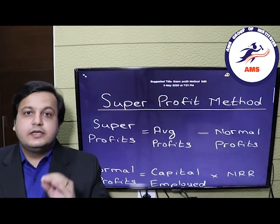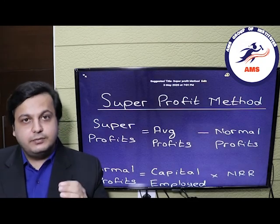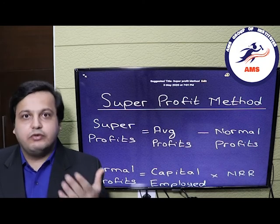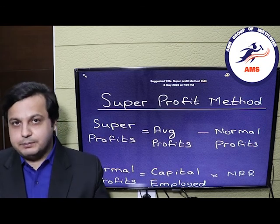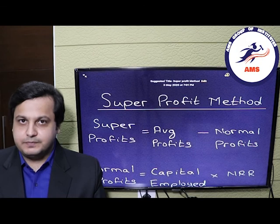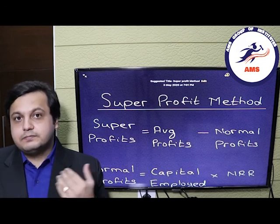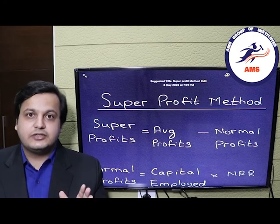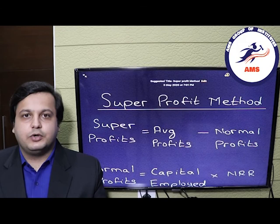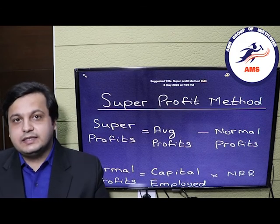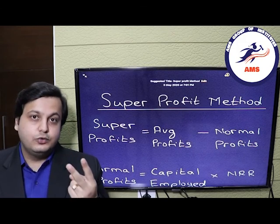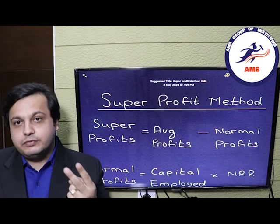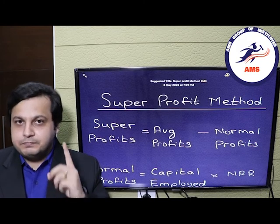Now what are super profits? Super profits are all those profits which we are earning extra compared to the rest of our peers in that industry. For example, we are in the steel manufacturing business. Our company earns 12% profits, but the overall steel industry earns a profit of 10%. So we are earning 2% extra — this extra 2% becomes the super profits our company is earning.